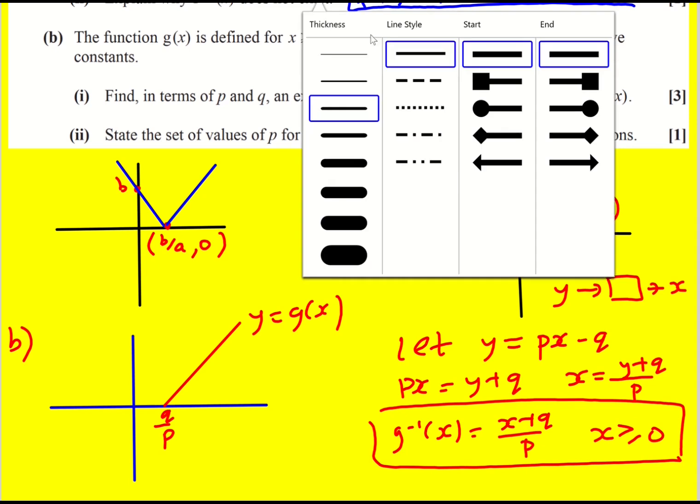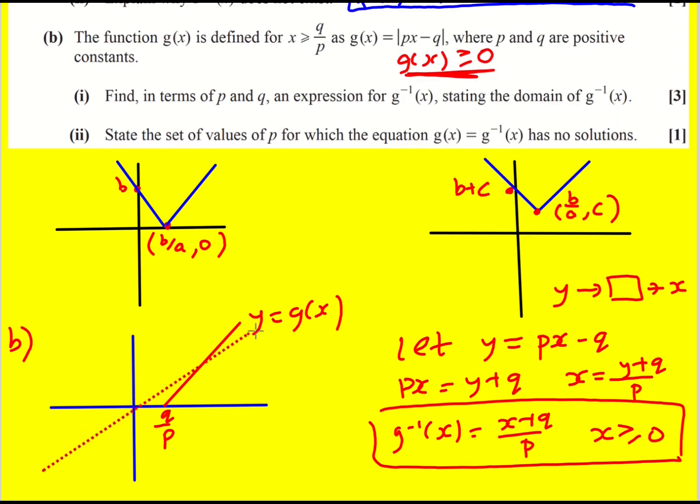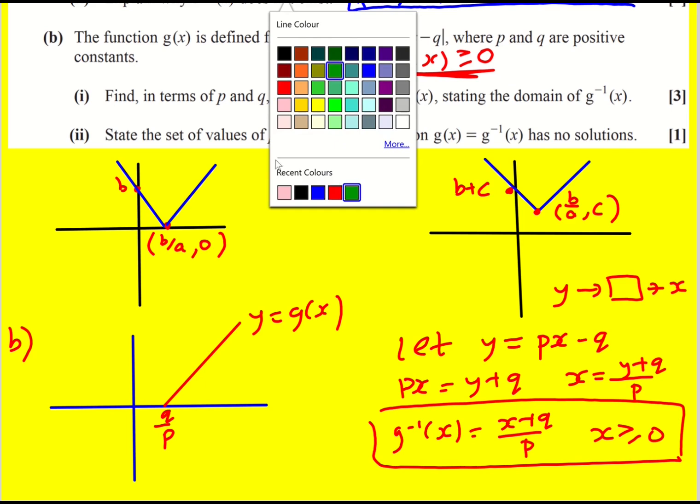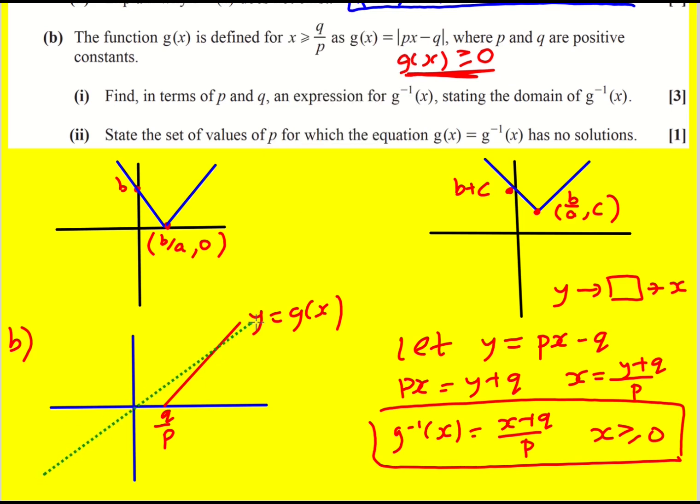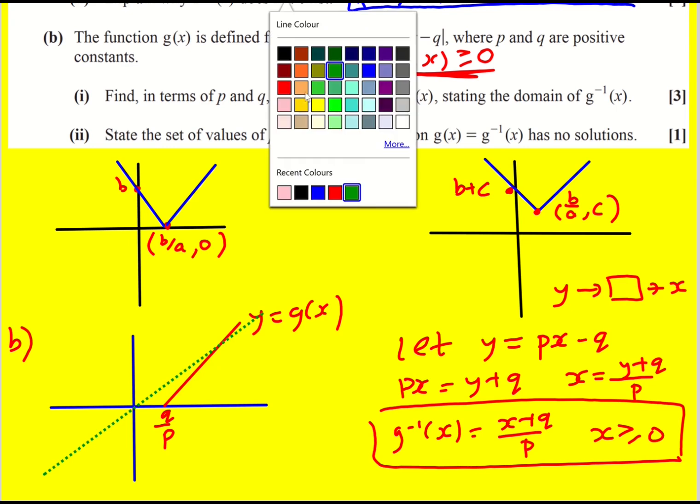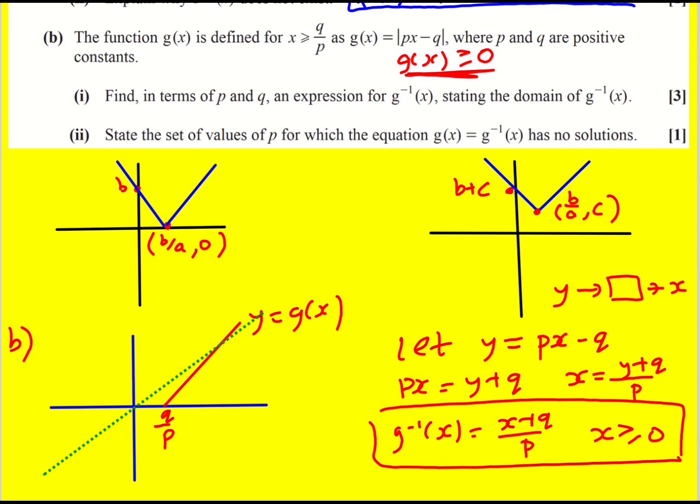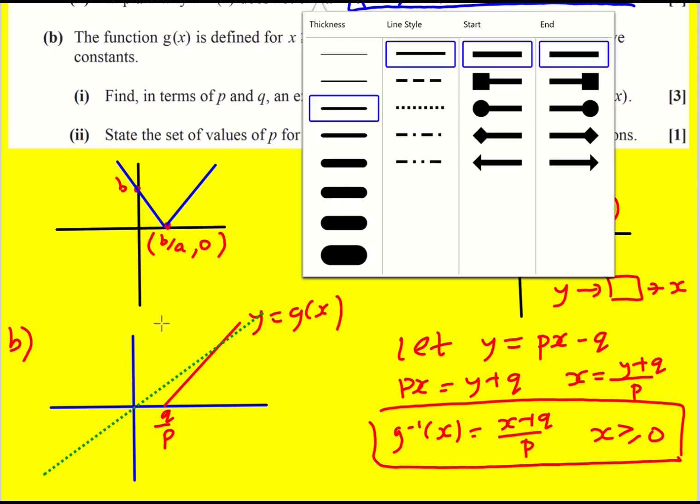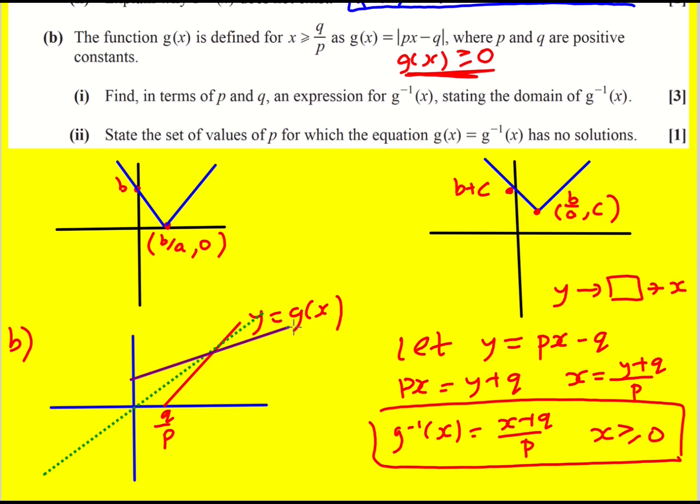Now I just want to talk about this. It doesn't really come up in the question but the inverse is a reflection of the original function in y equals x. So what we would get for the inverse is something that looks a bit like this. And they all intersect at y equals x.